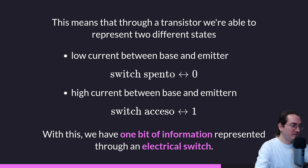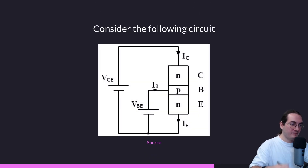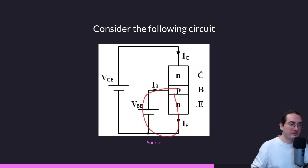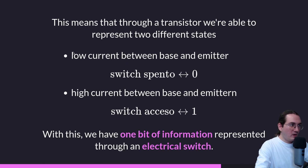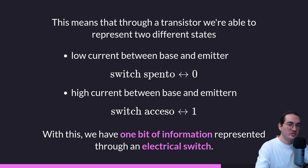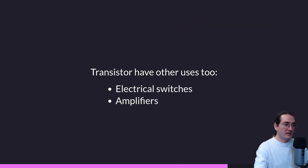Through the transistor we can represent two different states: no electricity between base and emitter means the light bulb is off — we represent zero; electricity between base and emitter means the light bulb is on — we represent one. We say: low voltage between emitter and base turns the transistor off; high voltage turns it on. When on, electricity runs between emitter and collector. With this we have one bit of information represented through an electrical switch.